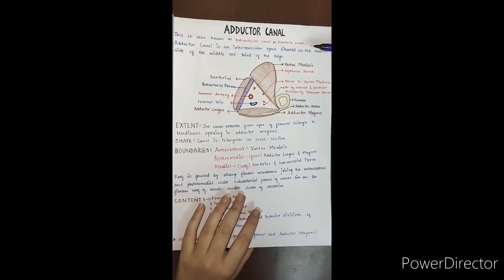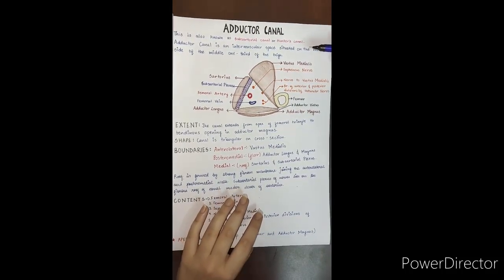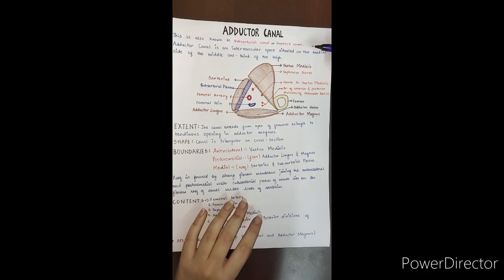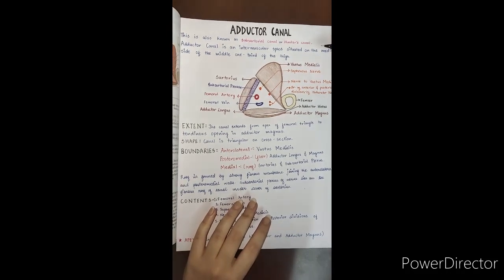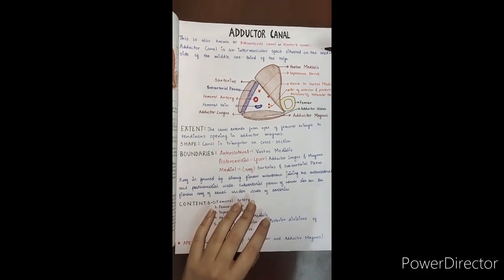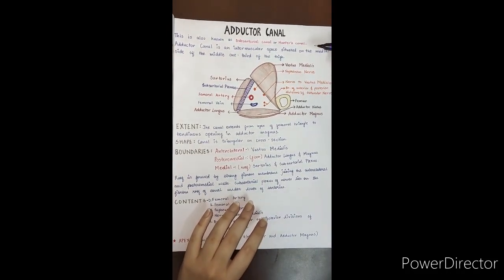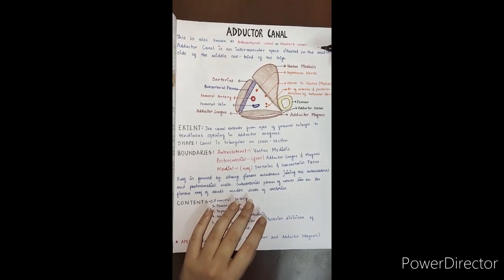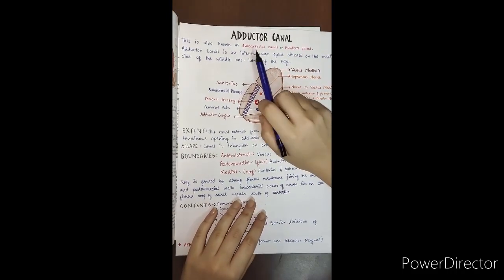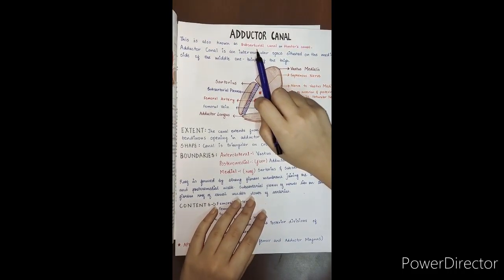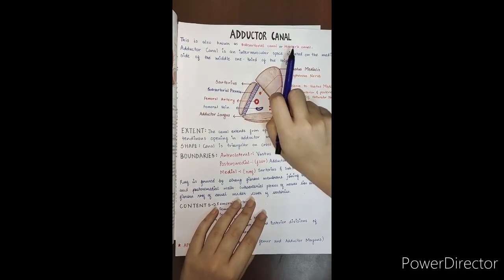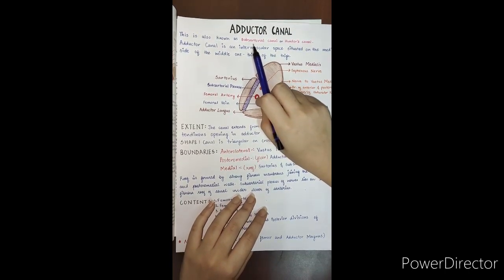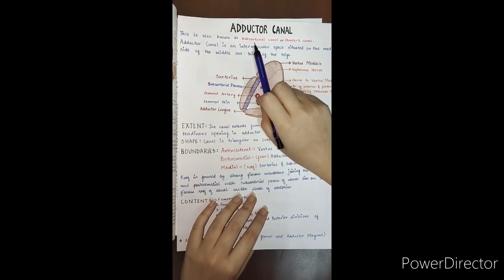Hi guys! Before starting with this video let me tell you something. You know you see your nose all the time — your brain just chooses to ignore it. Now without wasting any time, let's start with the topic: adductor canal. We call it subsartorial canal or Hunter's canal. It is called subsartorial because it is under the sartorius muscle.